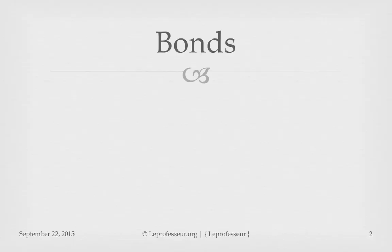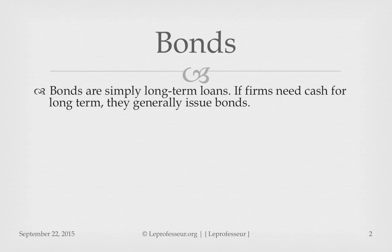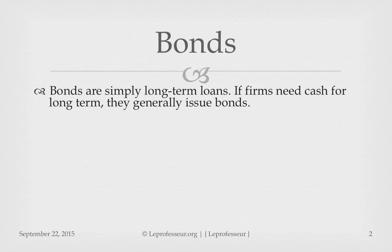So what is a bond basically? Corporations, governments, or municipalities, if they need money for longer term, they typically issue bonds. If corporations or firms need money for shorter term they can go to a bank and get a loan. But for a longer term — say 10 years, 20 years — it's very difficult to get a loan from the bank, and even if they manage, the interest rate would be too high. So if you are in a position of a CFO, chief financial officer, and you have sold shares in the company but still need more money, you may issue corporate bonds.